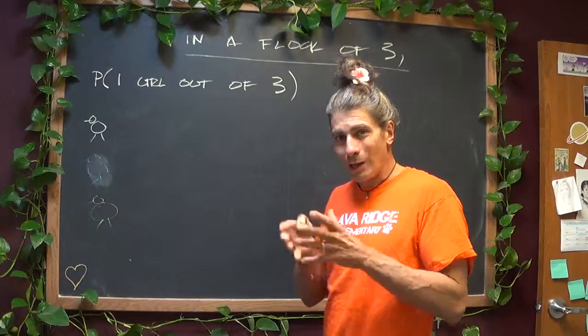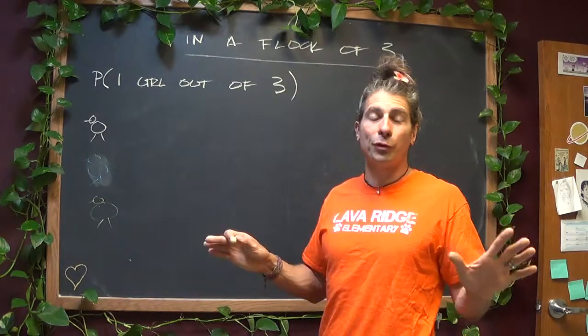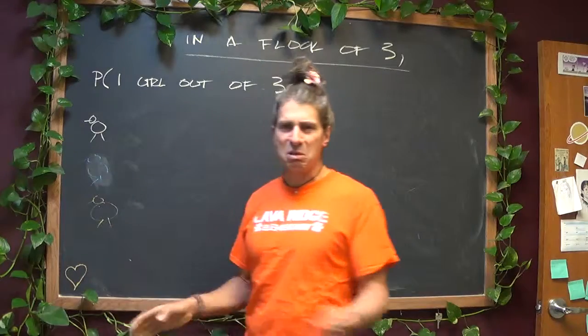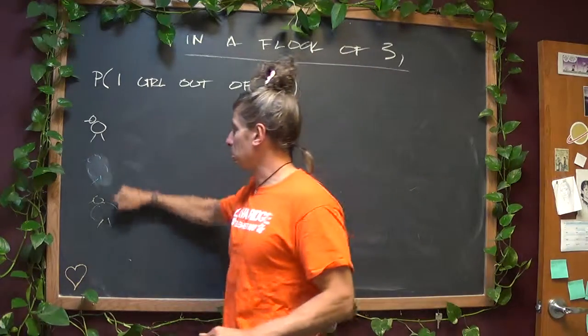Three chicks. The possibilities are not as simple as we want them all to be boys or all to be girls. If I want them all to be boys: boy, boy, boy, done. If I want them all to be girls: girl, girl, girl, done.